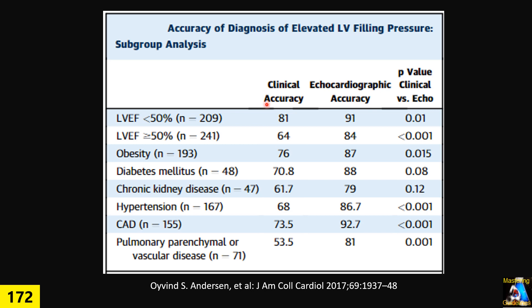So what do we do in those situations — patients with AFib, sepsis, or on a ventilator? How can we evaluate diastolic dysfunction, and most importantly, how can we measure and evaluate left atrial pressure? That is the most important parameter for patient management. Let's see how we can do it in those situations.